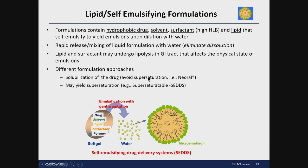Depending on the formulation concept, you could have complete solubilization of the drug — meaning no supersaturated state in the GI. A good example is cyclosporine. Or you could intentionally design the drug product to form a supersaturated state. In that case, you need to add a polymer to help keep the drug in the supersaturated state. This concept will be discussed in the next few slides.